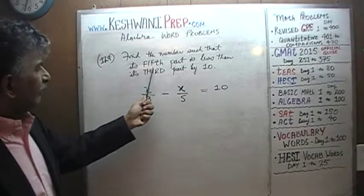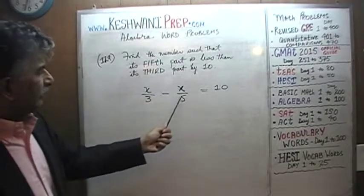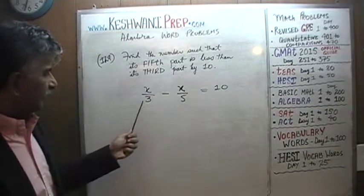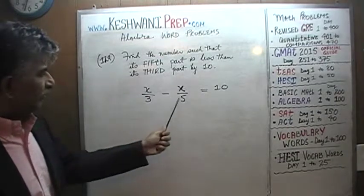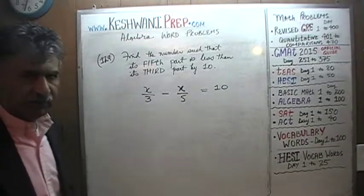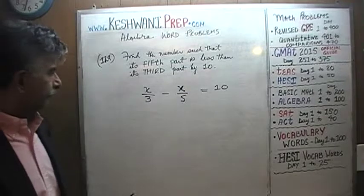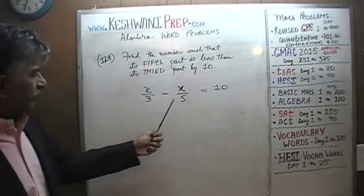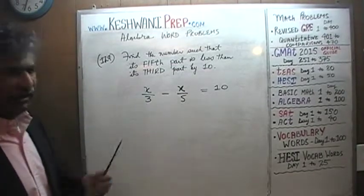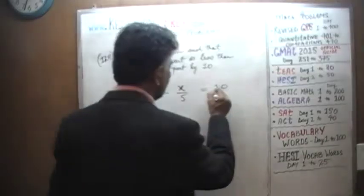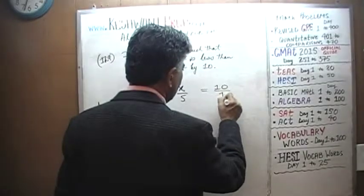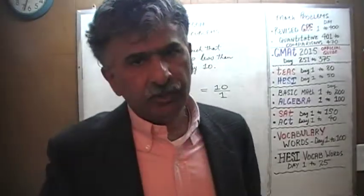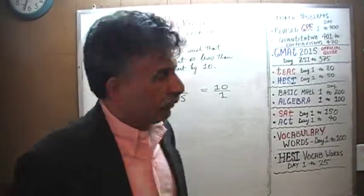Find the number such that the fifth part is less than the third part by 10 — in other words, the third of the number exceeds the fifth by 10. We have a denominator of 3 in one term and a denominator of 5 in another. We need to find a common denominator before we can proceed.